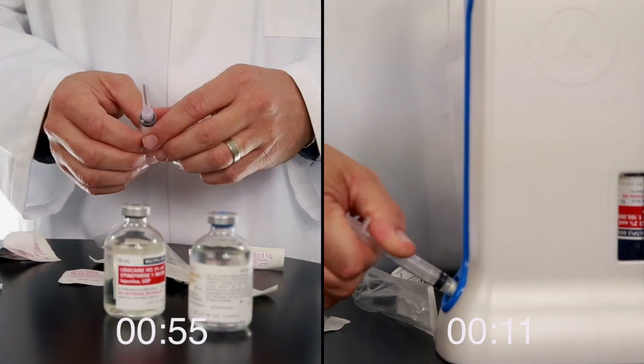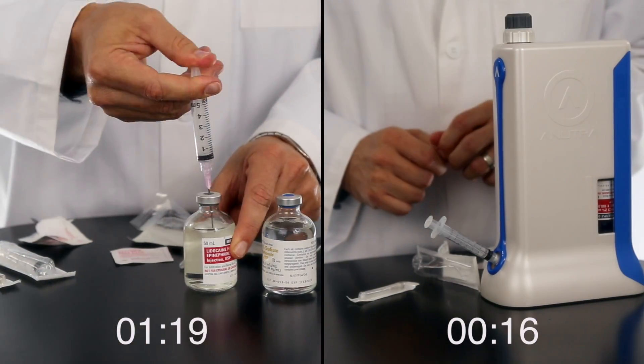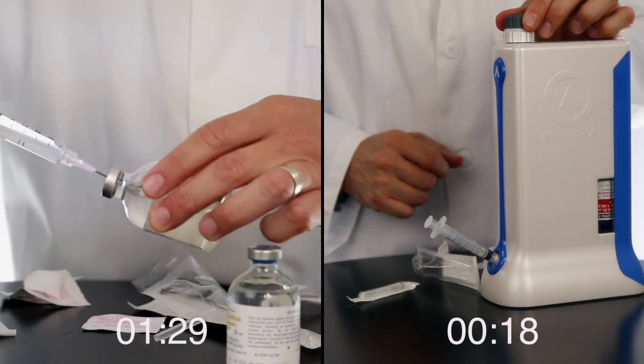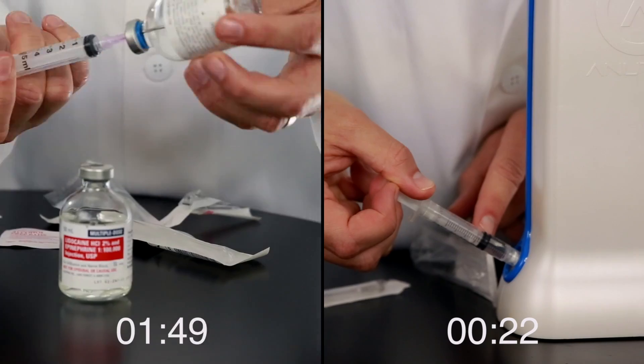Click the gray knob one time for 1 ml of buffered lidocaine. Click one, pull to the 1 ml mark.